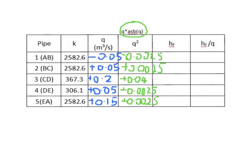Then you carry on completing the table: completing your HF values, which are just K times Q — making sure you get the right sign. You'll need to do the sum at the bottom, then calculate HF divided by Q using the same signs, and sum those up. Then calculate the delta Q to add to each pipe. You can go through those as in the material on the VLE. Some people will say these signs are all in the opposite direction to the example on the VLE — well, so they are, but you will get the same answer in the end, or something very close after two iterations.